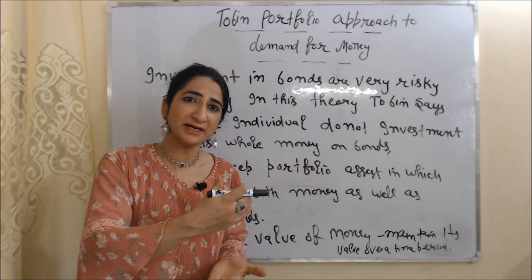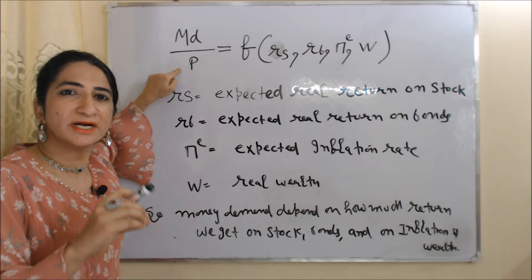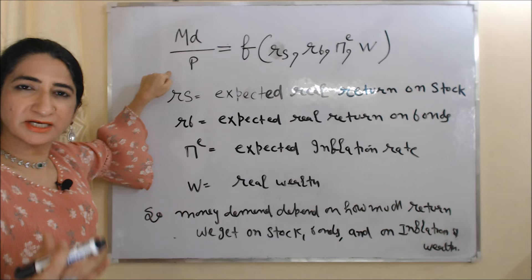Now we are going to talk about the equation of this theory. In this equation, MD over P is our real money demand. We calculate real money demand by dividing nominal money demand by price. Here MD is nominal money demand, P is price, and MD over P equals real money demand.